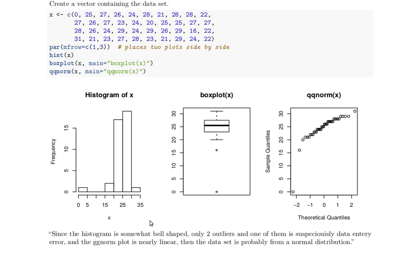So to summarize, since the histogram is somewhat bell-shaped with that outlier thrown out, and there's only two outliers in there—and this one is probably a data entry error—and the QQ norm plot is nearly linear, it's probably the case that this data set came from a normal distribution. So you can see that one data point that has an x value of zero; it's most probably a data entry error.